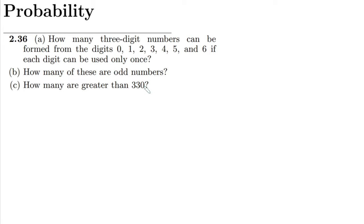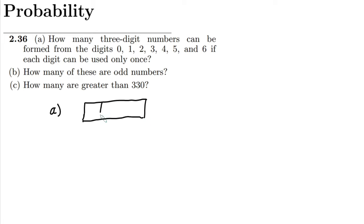So here we have this formulation where we have to make three-digit combinations such that each digit is represented only once. Looking at this overall block, we have different spots: this is the units spot, this is the tens spot, and this is the hundreds spot.